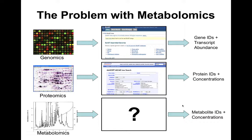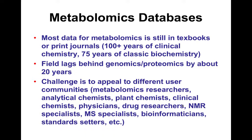The initial problem, 15 years ago, was that most of the data in metabolomics was in textbooks and journals — in paper. It still is, and there's a lot of it, because people have been doing pure metabolite analysis and biochemistry longer than they've been doing gene or protein sequencing. So there's a lot of material there, a lot of structures. But because so much is in paper rather than electronic resources, metabolomics has generally lagged behind genomics and proteomics.